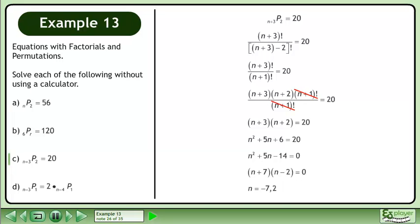The solution is n equals negative 7 and 2. We must reject n equals negative 7 because it would make the original expression undefined. The only answer is n equals 2.